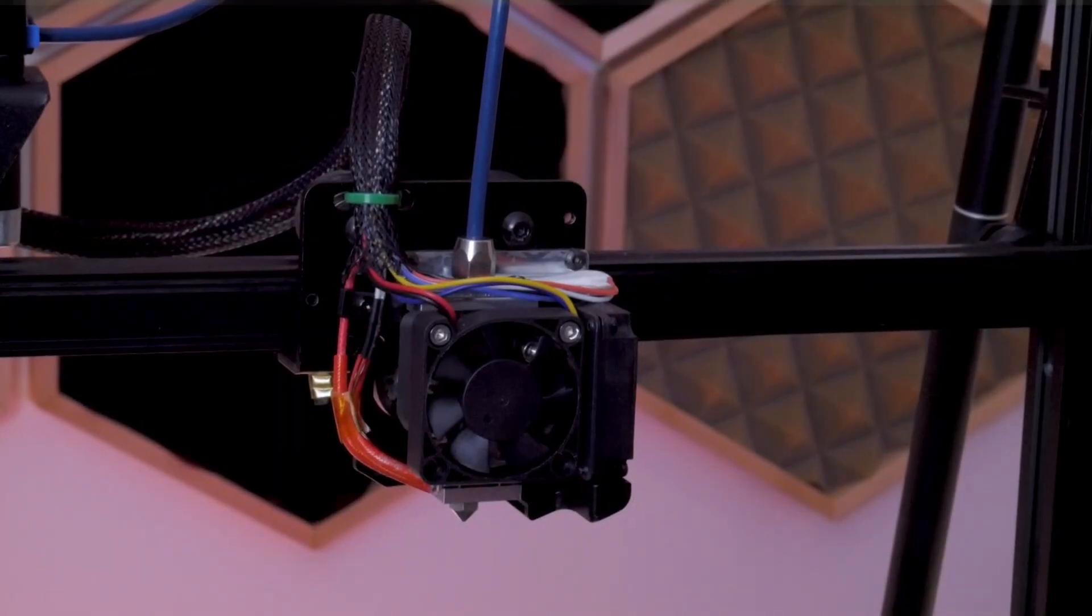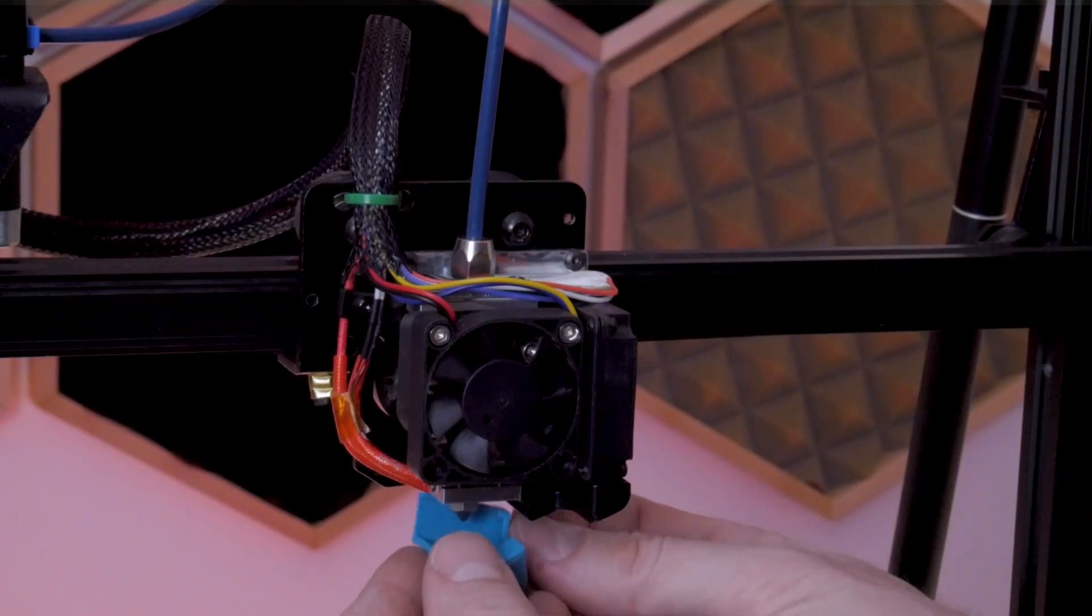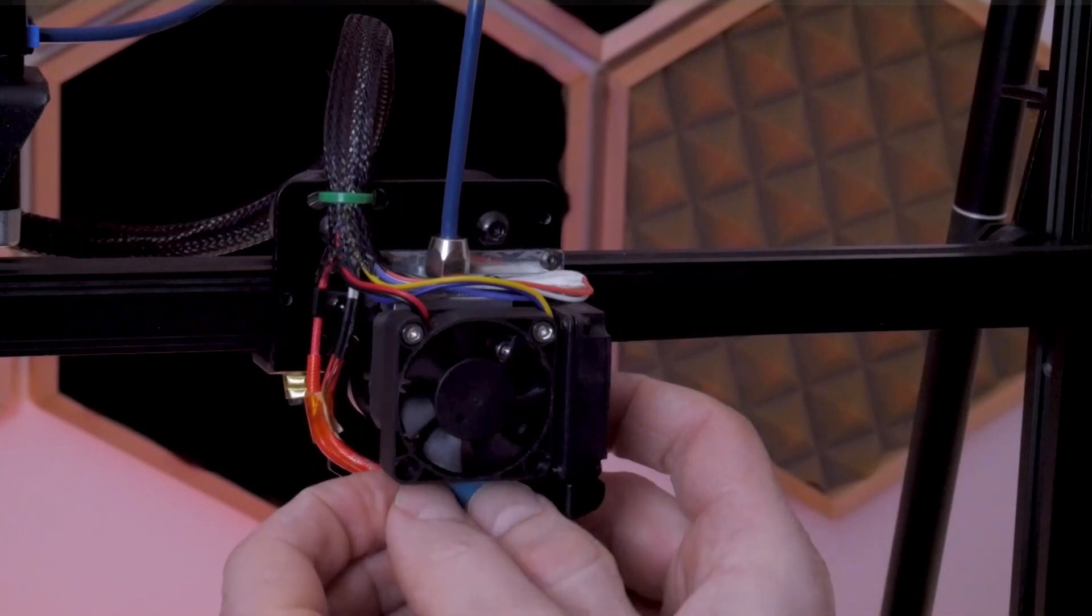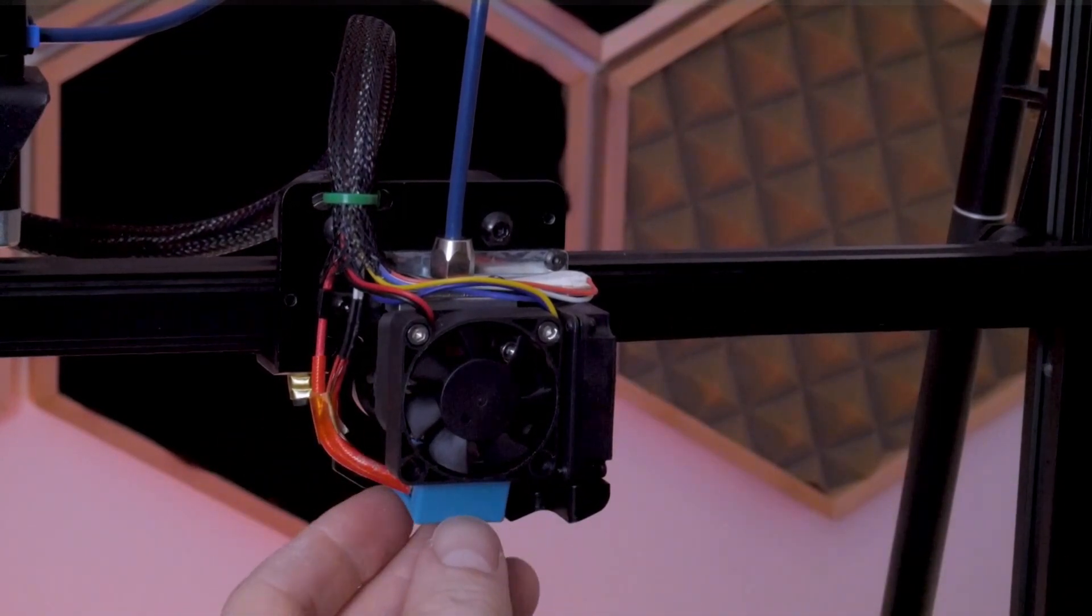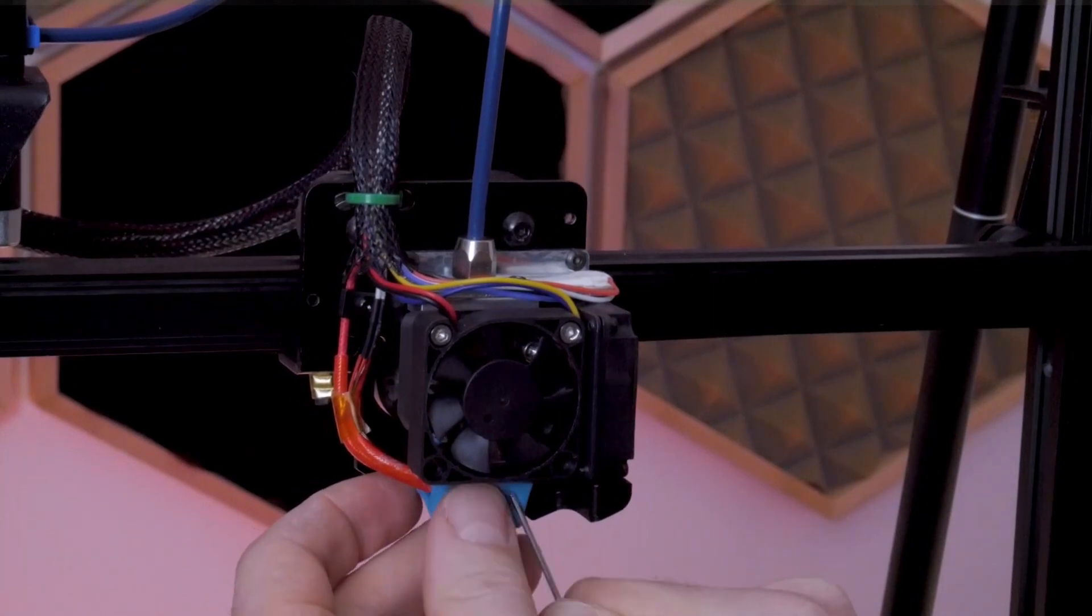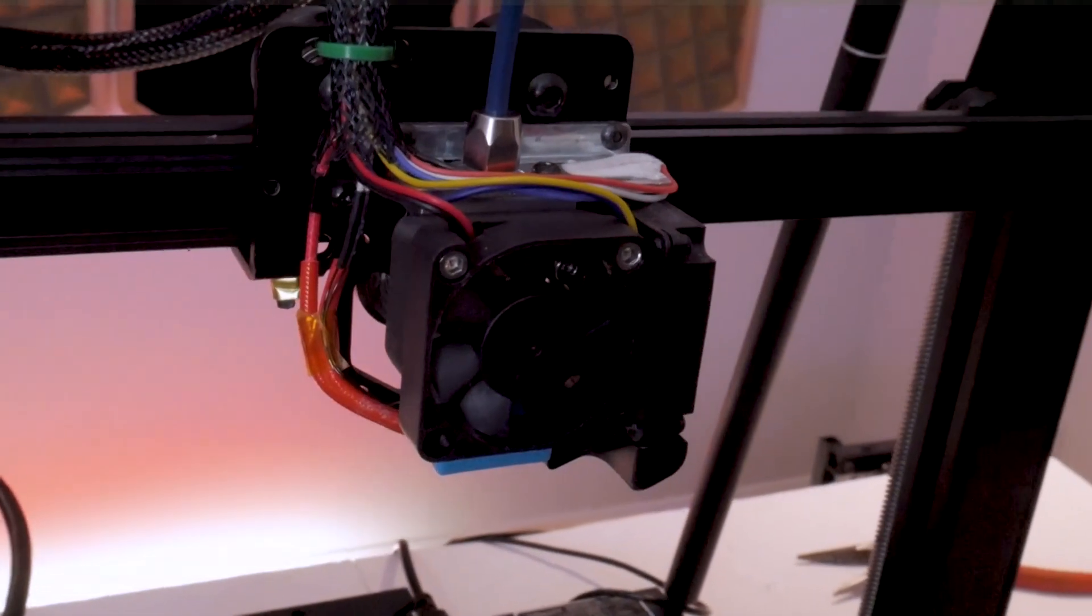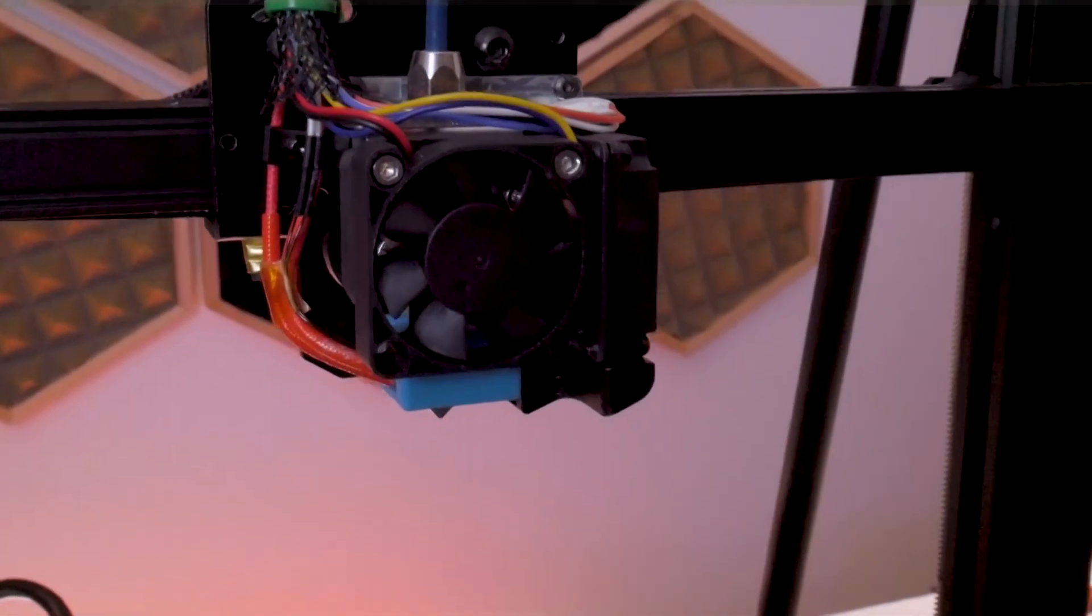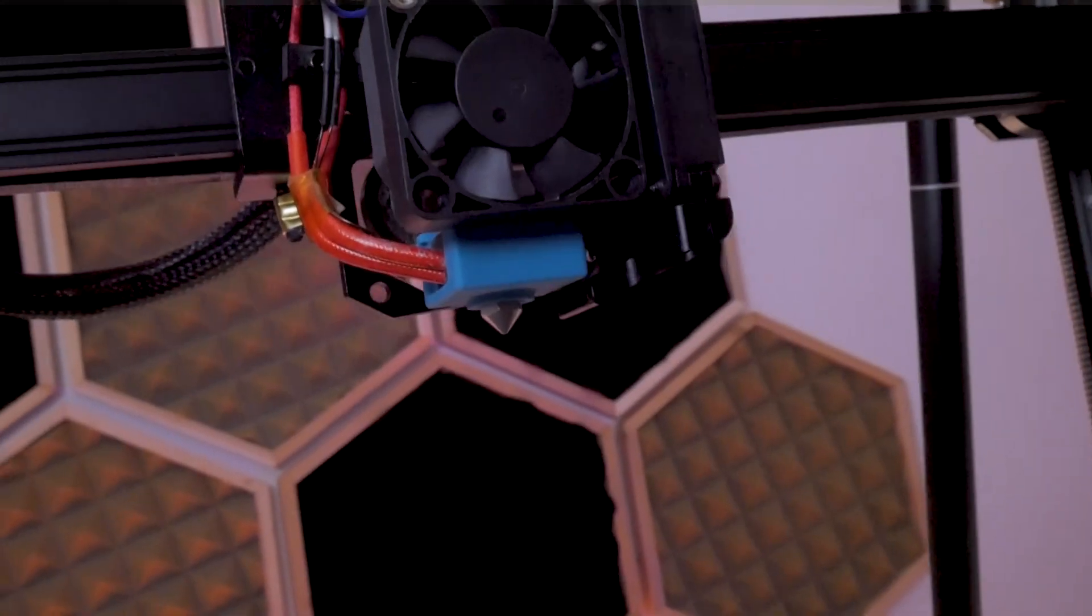Then the new blue silicone heater block sock goes on next, and it's a pretty tight fit between the heater block and the fan, so you might need to use one of your allen keys to stuff it up in there and get it to seat properly onto the heater block. At this point, your assembly should look something like this. All of your wires should be neat and tidy - nothing should be sticking far out that could get snagged or caught or pulled on when we go to put the fan shroud on.